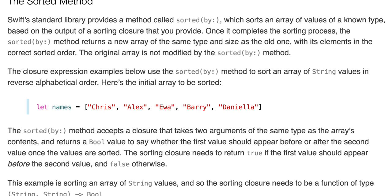The sorted method. Let names equal ["Chris", "Alex", "Iwa", "Barry", "Daniella"]. The sorted(by:) method accepts a closure that takes two arguments of the same type as the array's content and returns a Bool to say whether the first value should appear before or after the second value. The sorting closure needs to return true if the first value should appear before, and false otherwise.